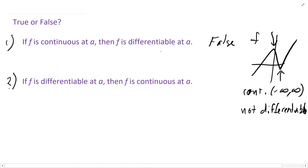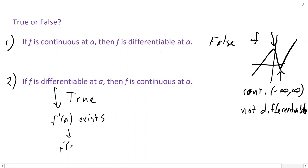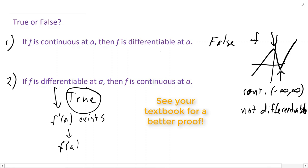Statement two: if a function is differentiable at a, then is it definitely continuous at a? That is true. If f is differentiable at a, that means f prime of a exists. If f prime of a exists, then f of a must exist — we can't evaluate the derivative at a point if the original function did not exist at that point. So if f is differentiable at a, then f is definitely continuous at a.